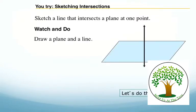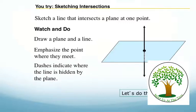Now we're going to draw some three-dimensional figures. We're going to sketch a line that intersects a plane at one point. So first you're going to draw a plane and a line. Right now it looks like a piece of paper with a pencil laying on top. To make this look more 3D, we're going to emphasize where the two come together. And then we're going to put dotted lines to show that those dotted lines are underneath.